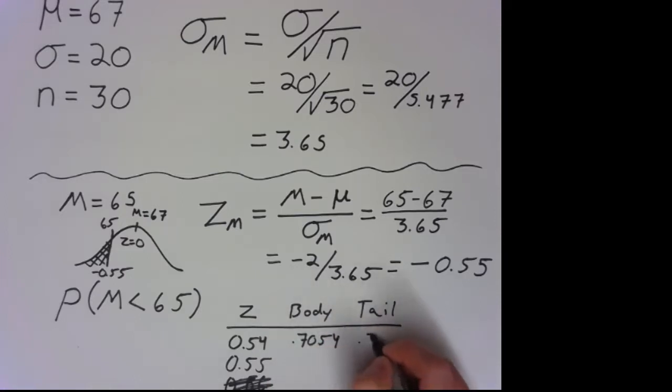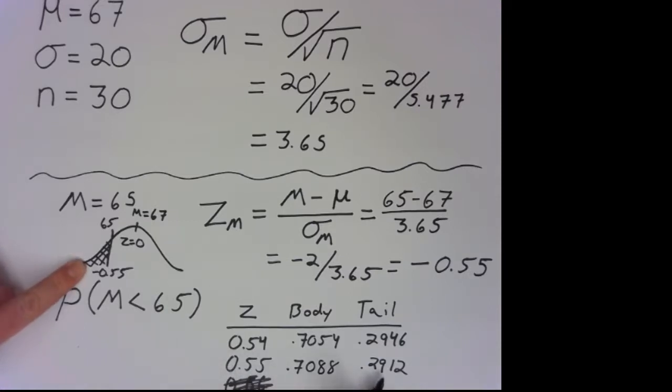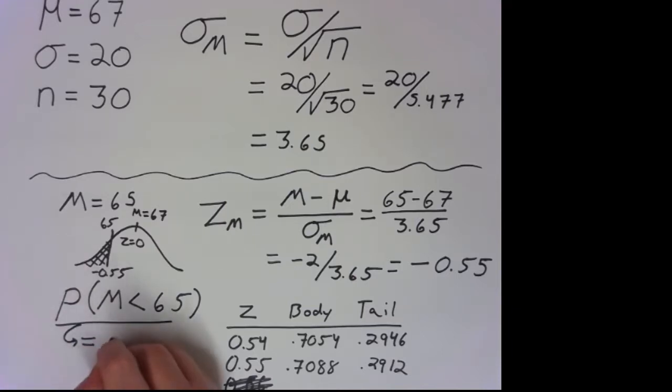So when we look in this table, the first thing that we'll actually end up doing is looking up our z-score, 0.55. Notice it's positive 0.55. The table only gives positive numbers, but it should be symmetrical. And so then we can look at the area in the tail to get our final value.